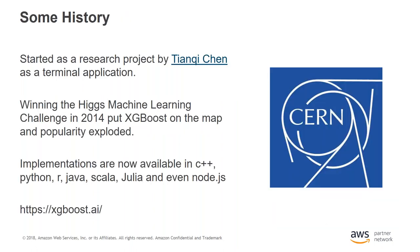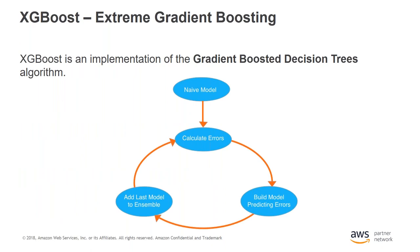A little history on XGBoost: it was started by graduate student Tianqi Chen, still at the University of Washington. They're famous for winning the Higgs Machine Learning Challenge in 2014. There are implementations managed by his group in C++, Python, R, Java, Scala, Julia, and even Node. Gradient-boosted trees work by combining predictions from many simple models, each trying to address the weakness of the previous model. XGBoost implements these boosted trees.